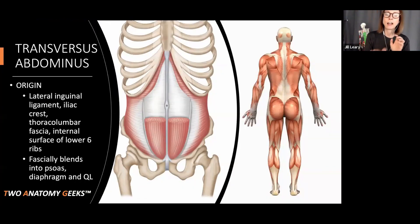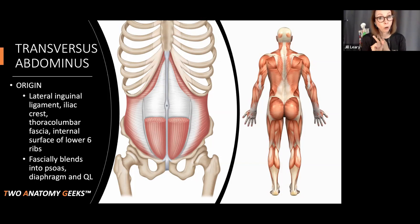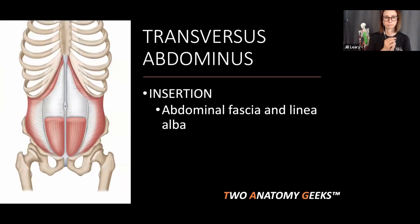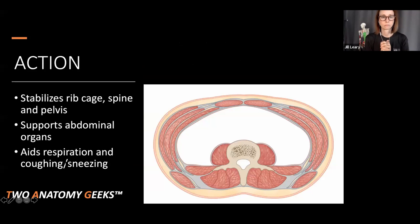Going back — the origin on the inside surface of those lower six ribs is similar to the diaphragm. Fascially, it blends with the diaphragm, with the psoas which we've covered in previous webinars, and with the QL — another deep muscle of the back between the iliac crest and the last rib, which we'll talk about today. Here's your linea alba: that's your belly button right there. The linea alba runs from the xiphoid process all the way down to the pubic symphysis, fascially blending into that piece of cartilage between the two halves of your pelvis.